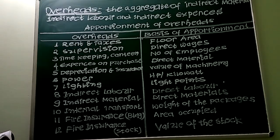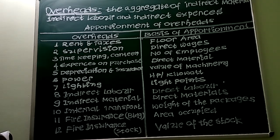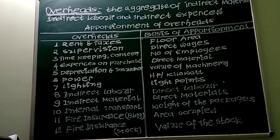Fourth important classification is distribution overheads. These include all items of overheads incurred in delivering the product to customers — for example, packing materials, carriage outwards, repairs and maintenance, depreciation of delivery vans, and wastage of initial products. These are the classifications of overheads under functions.